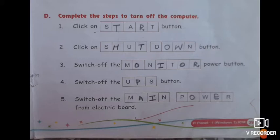Switch off the dash from the electric board: main power. In this you will write A I, main, and in power you will write O and E. Power, main power. This is very important.